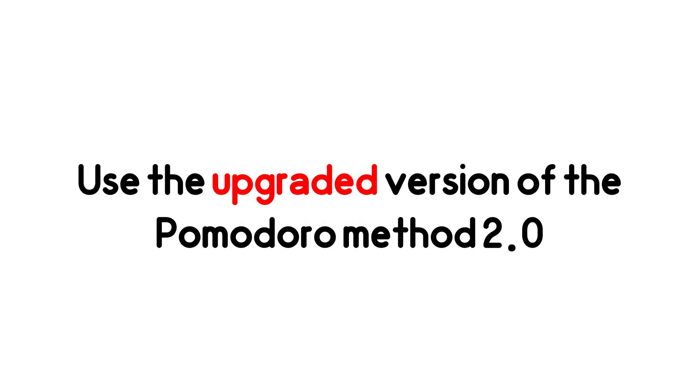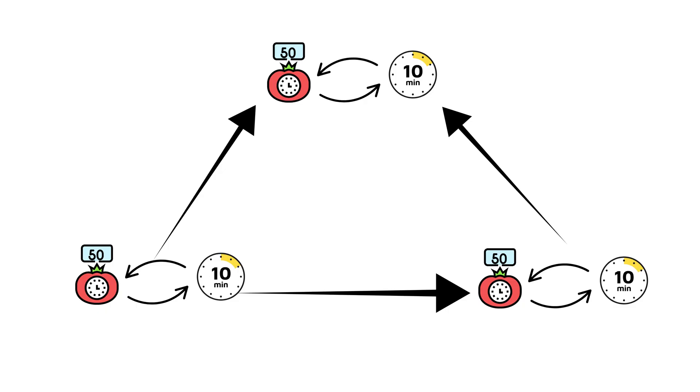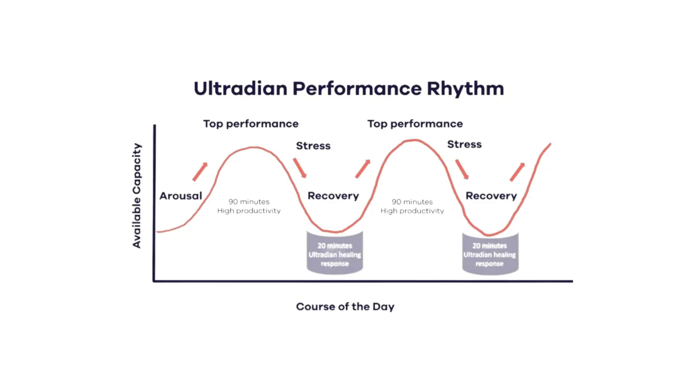Use the upgraded version of the Pomodoro method. Instead of 25 minutes of study, do 50 minutes of deep work, plus 10 minutes of recovery. After every three cycles, take a 30-minute break. This pattern aligns with the ultradian rhythm, the natural cycle of focus and recovery that successful people and chess masters use.